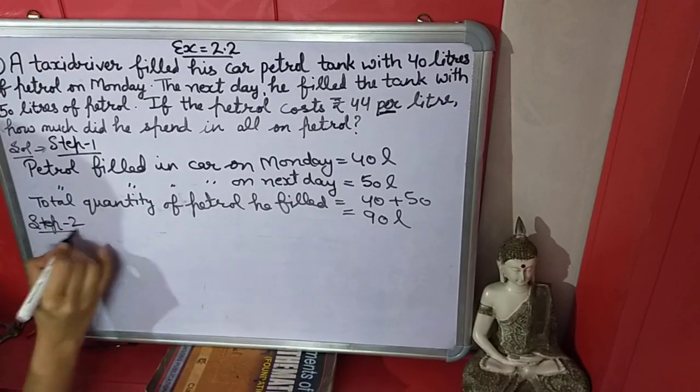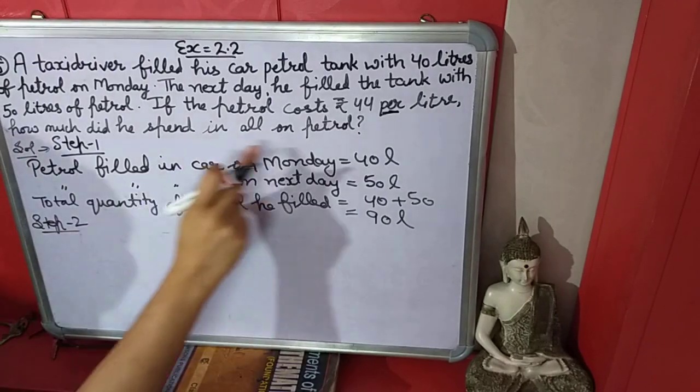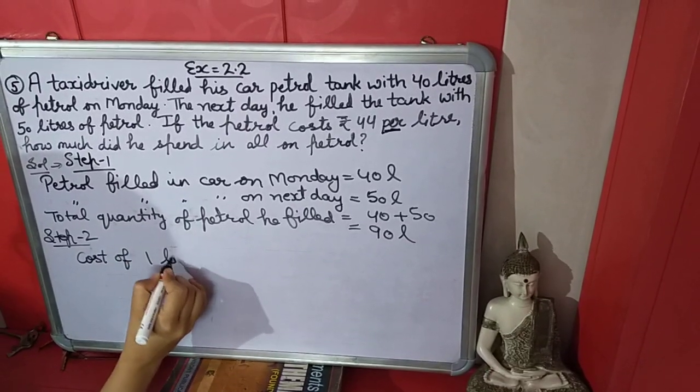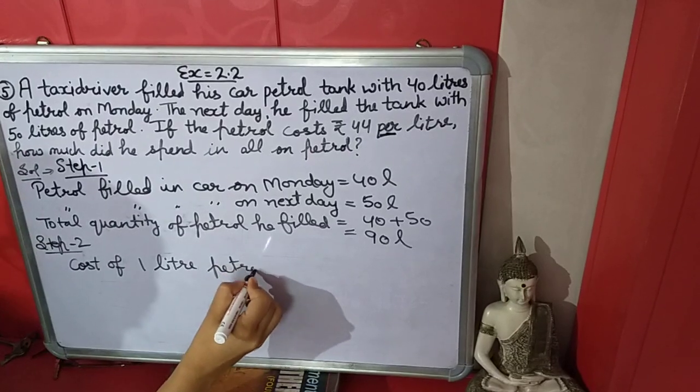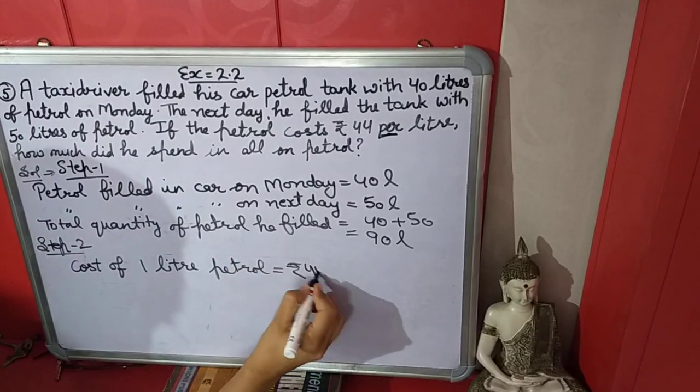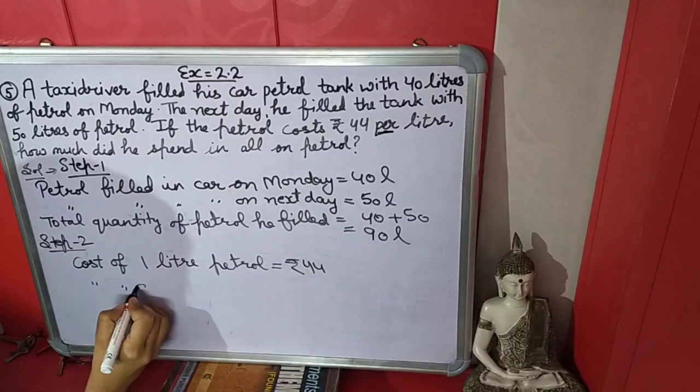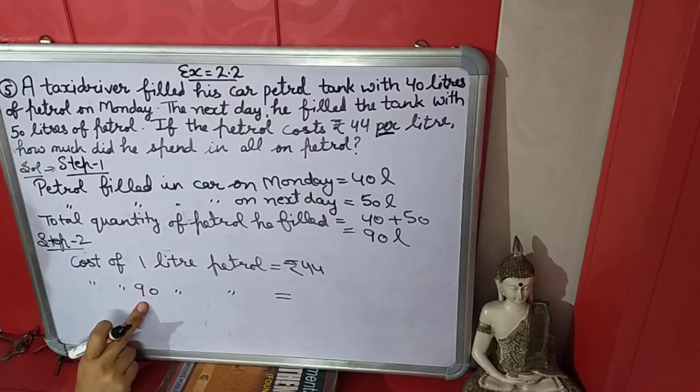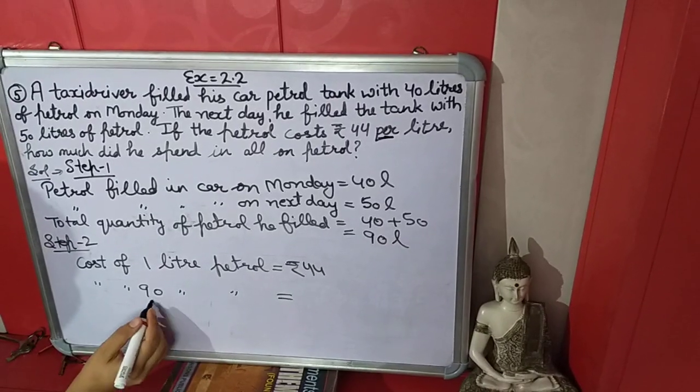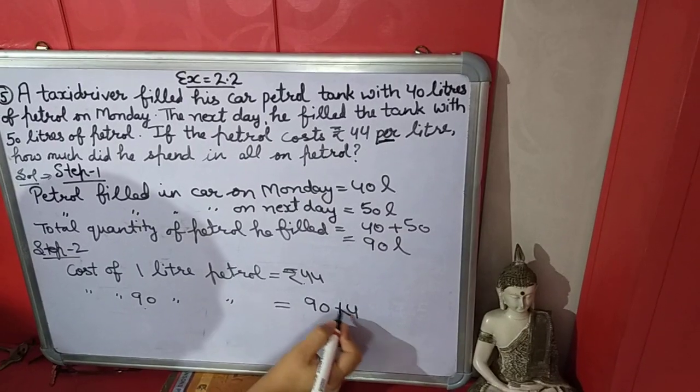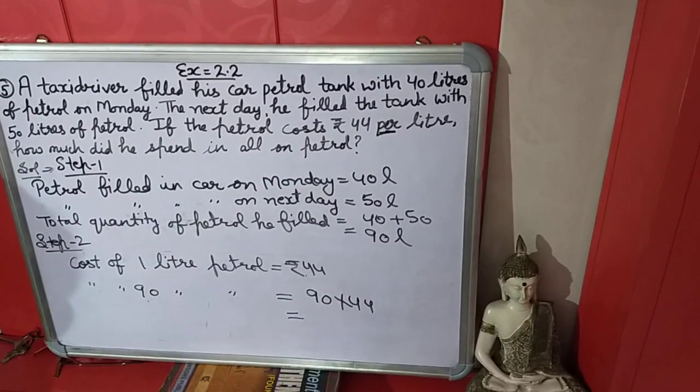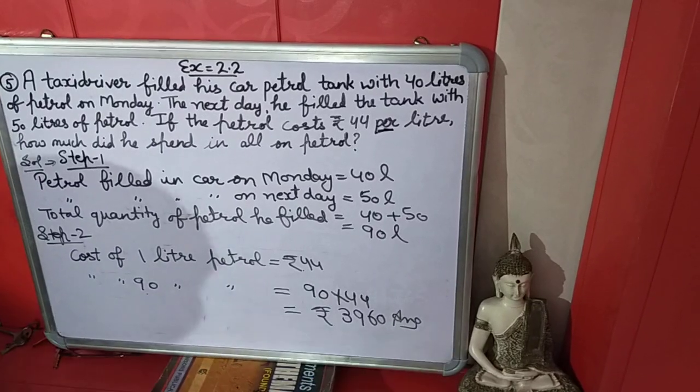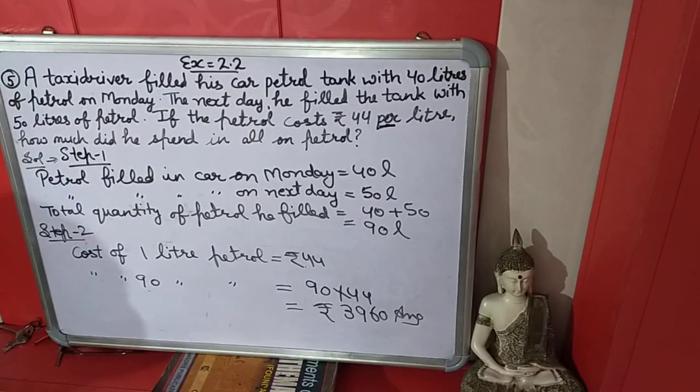Now we have to find how much money he spent on this petrol. Cost of one liter of petrol is rupees 44. Cost of 90 liters of petrol: using unitary method, we will multiply this number and this number. So 90 multiply by 44, it will be 3960.